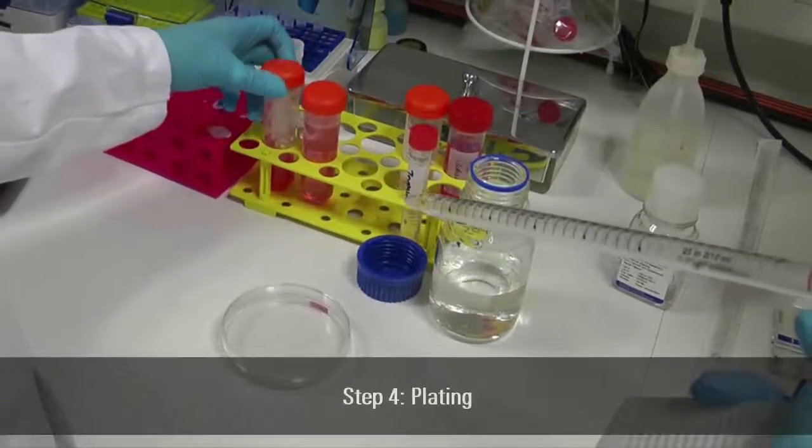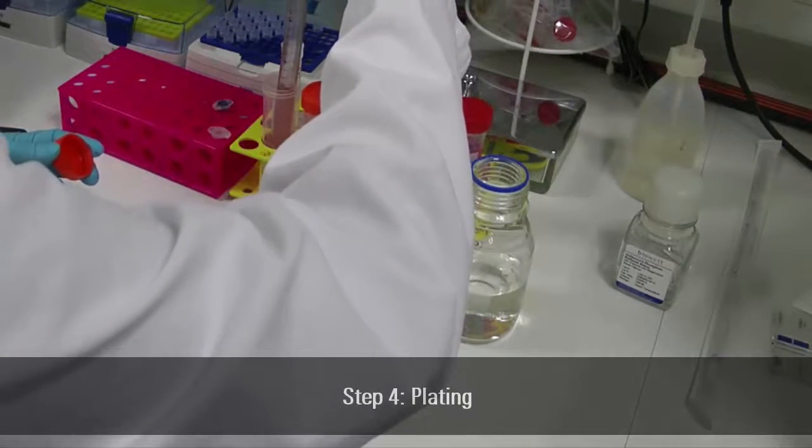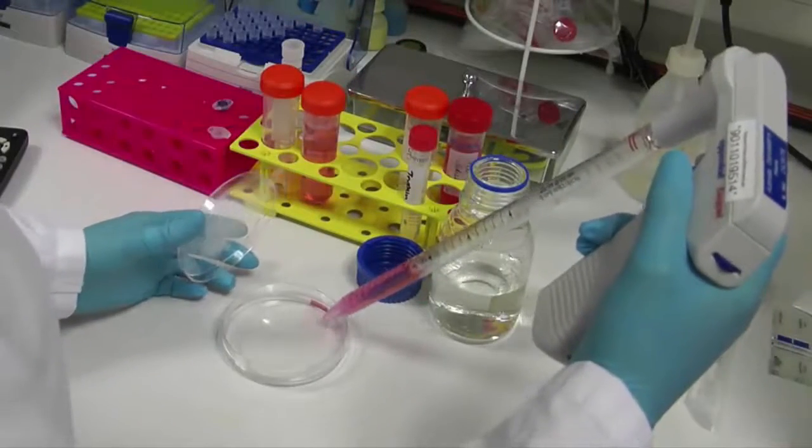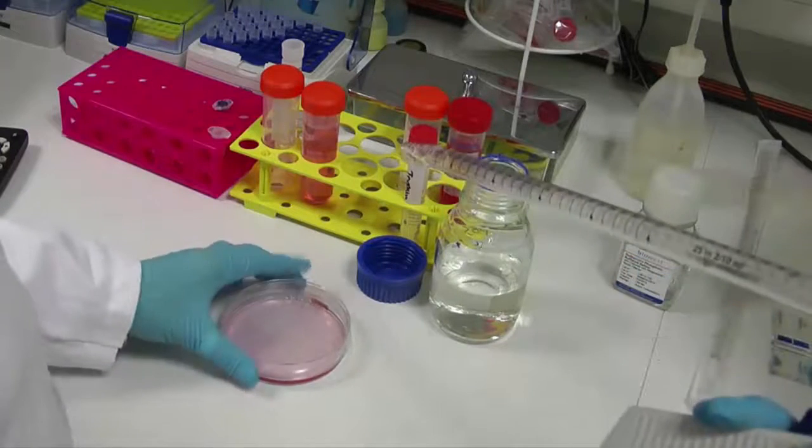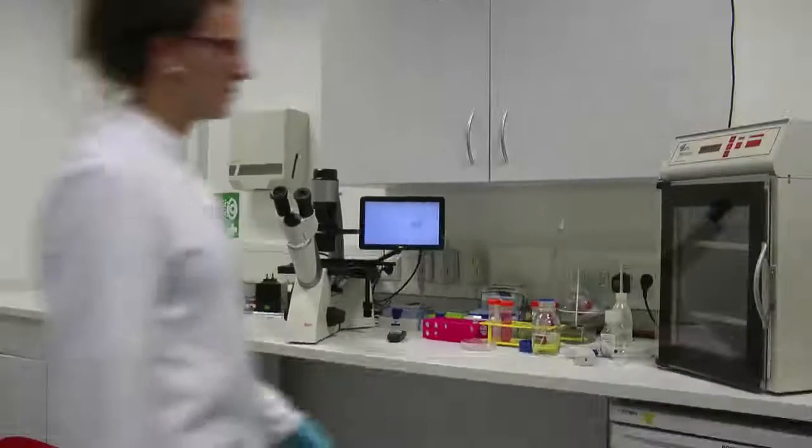Pipet the required volume of cells into new dishes at the required split ratio and top up with culture medium to the required final volume in each dish. Here we use the split ratio of 1 to 10. Leave cells overnight to recover and settle.